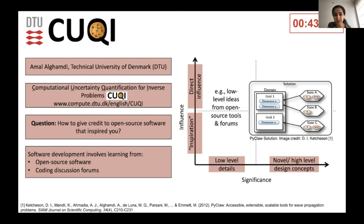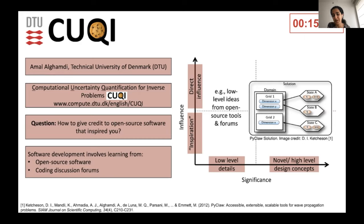In terms of inspiration, it can be a general inspiration, or it can be a very direct influence where we see an implementation and really find no other way to implement this functionality neatly other than that particular implementation. So across these kinds of four dimensions, how do we cite or give credit to a software development idea that we were inspired by in our development of code?